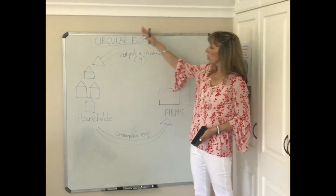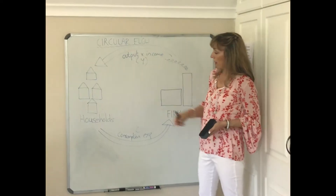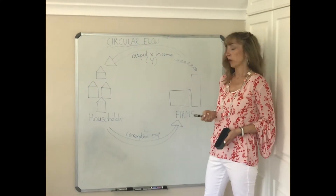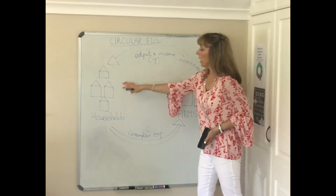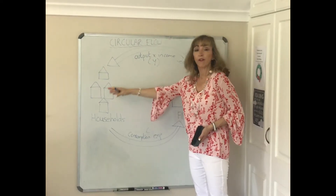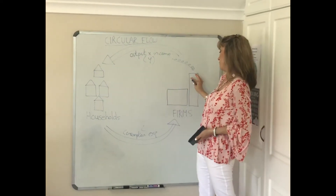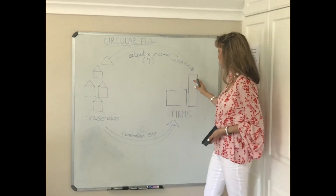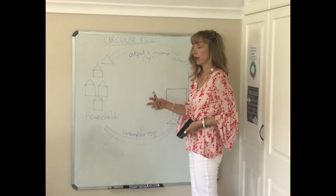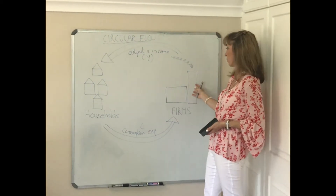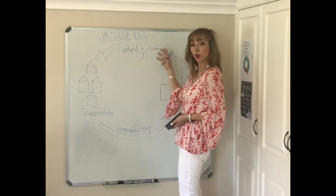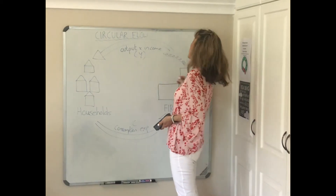If you recall the circular flow model that you may have looked at in your introductory economics courses, households provide the factors of production to firms. Firms then use those factors of production — land, labour, capital and entrepreneurship — and combine those to produce goods and services.